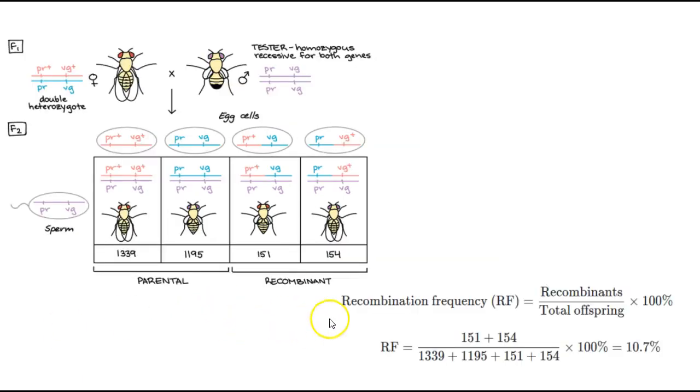So how do we do it? From this, we actually take what the recombination frequency, which is the recombinants over the total. And we can see here that we have 151 recombinants and 154 recombinants, which is going to give us 305 recombinants. Out of the total, you add all four, and you multiply by 100%, and you get 10.7. So basically that 10.7 also equates to the distance apart that the PR and the VG gene are on a chromosome. They're 10.7 MAP units apart.